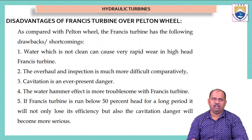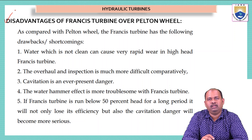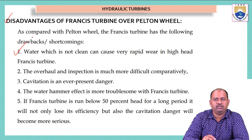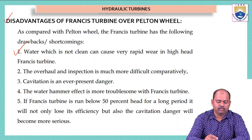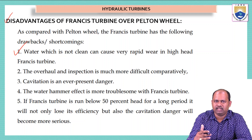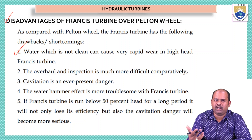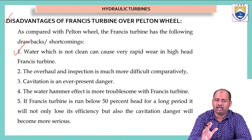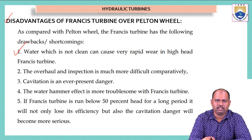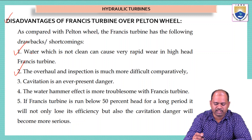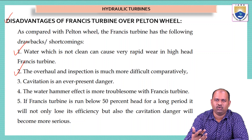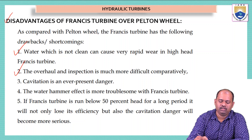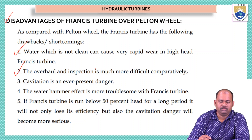The Pelton wheel turbine cannot be made small. Now for the disadvantages: first, water that is not clean can cause very rapid wear in high-head Francis turbines, because water flows into a spiral casing and if it contains more dust particles it may damage the turbine vanes. Therefore the water must be filtered before entering the Francis turbine casing. Second, overhaul and inspection is more difficult compared to the Pelton wheel turbine because everything is in a closed casing to maintain low pressure inside.